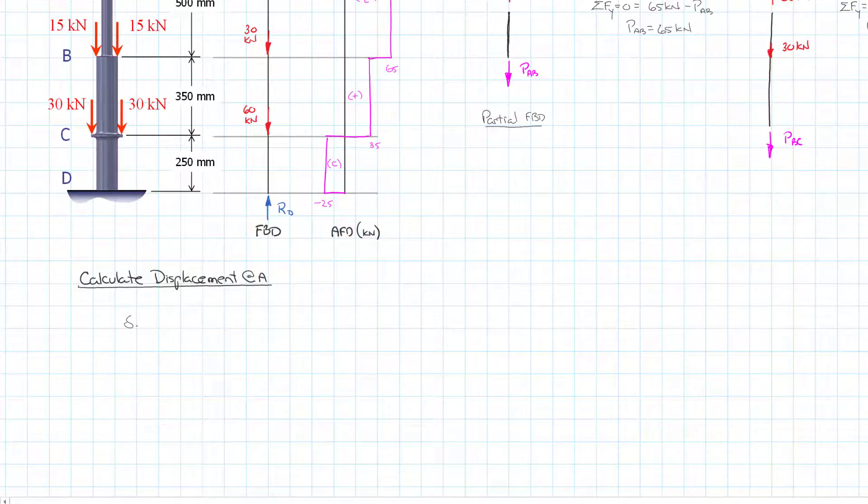We know that the displacement at A equals the sum of, and we'll use our displacement equation, so it's P_i L_i over E_i A_i. The i's just represent each of the individual sections of discrete value, and that discretization can come from different internal loads, different areas, or different moduli.